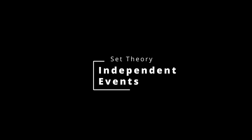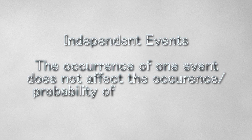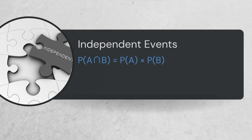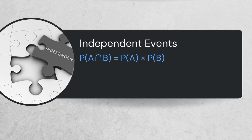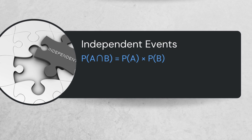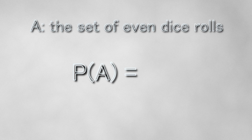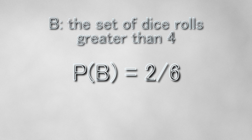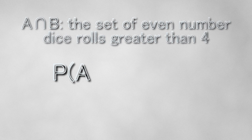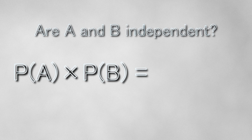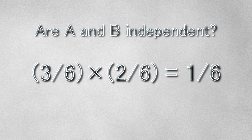Two events are independent if the occurrence of one event does not affect the probability of the other event. Mathematically, this is defined as the probability of A times the probability of B equals the probability of A intersection B. Going back to our example, the probability of A is 3 over 6, the probability of B is 2 over 6, and the probability of A intersection B is 1 over 6. So when we plug these probabilities into the formula, we see that events A and B are indeed independent.